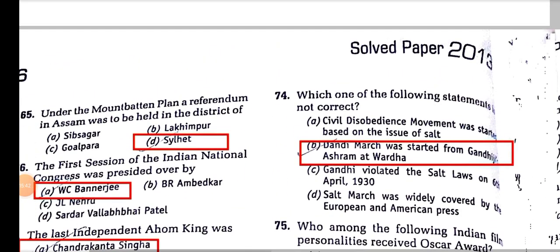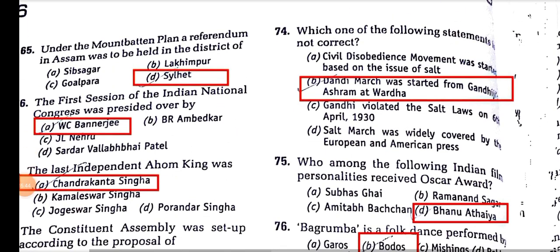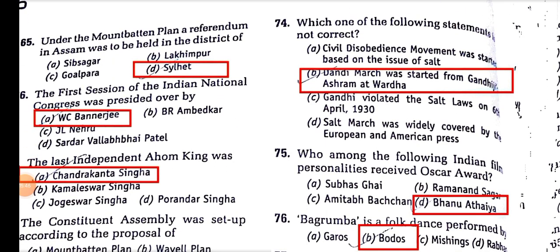Which one of the following statements is not correct? The Civil Disobedience Movement was started based on the issue of salt — correct. Gandhi violated the salt laws on 6th April 1930. The Salt March was widely covered by European and American press — correct. But Dandi March was started from Gandhiji's ashram at Sabarmati, Ahmedabad — not from Wardha.